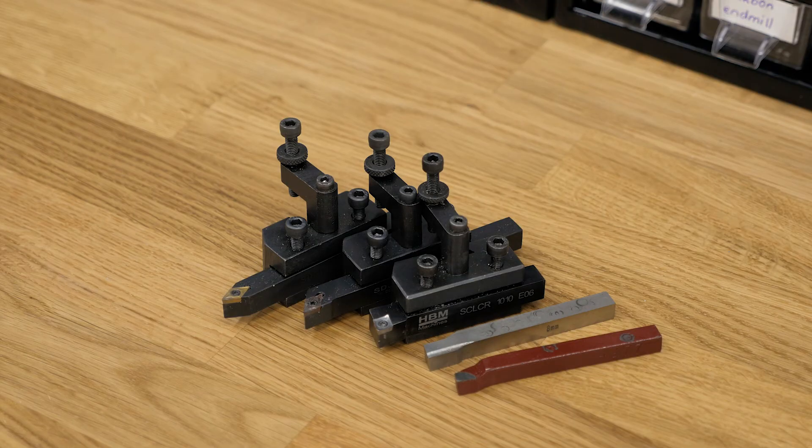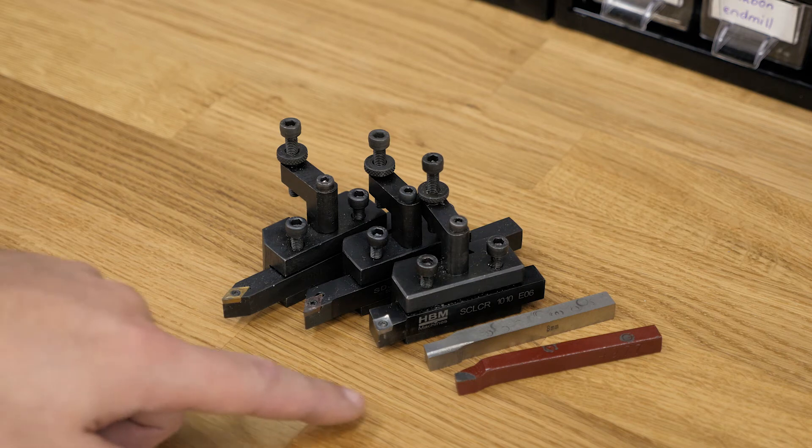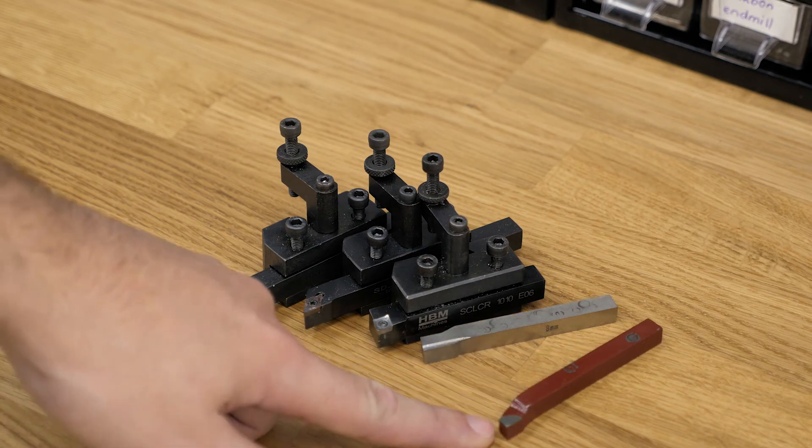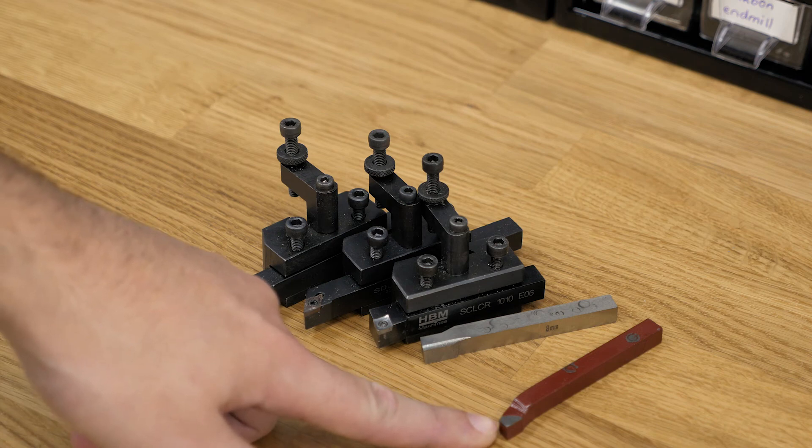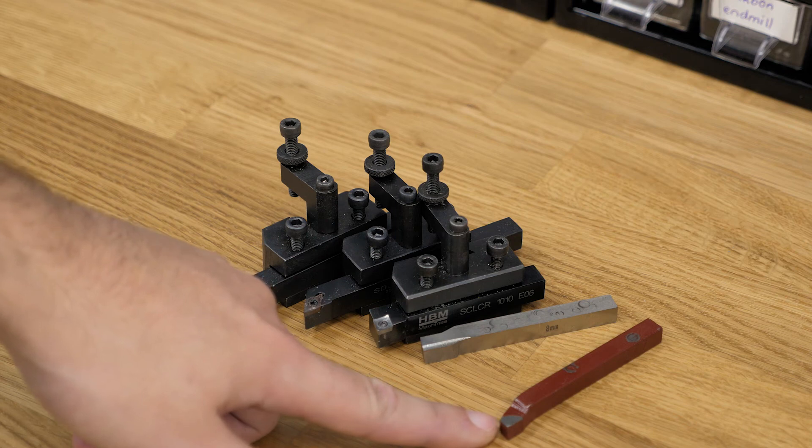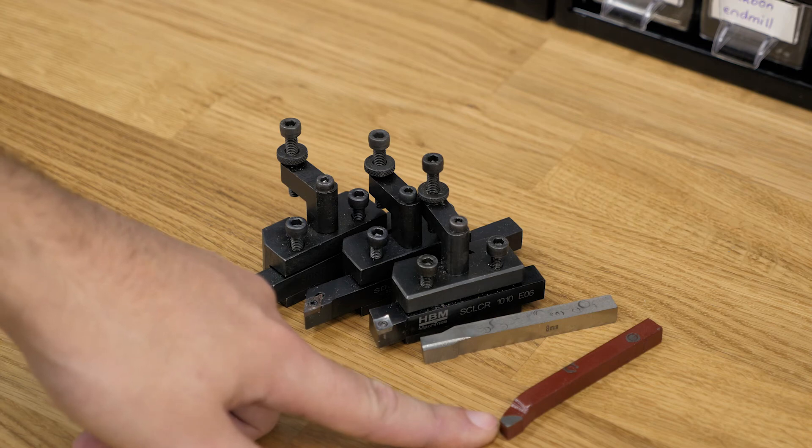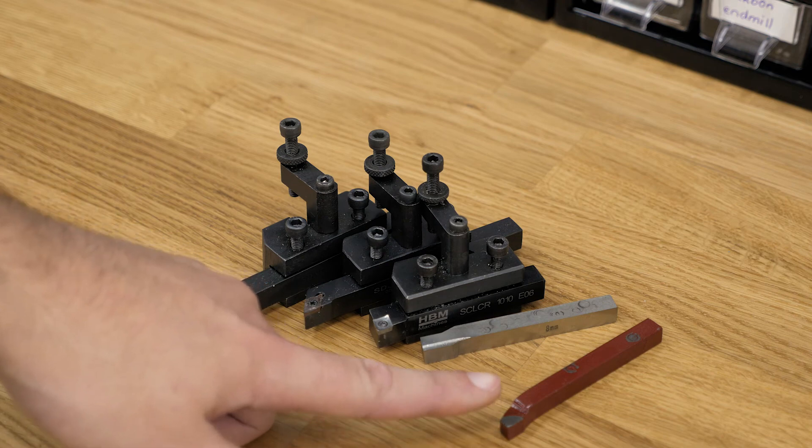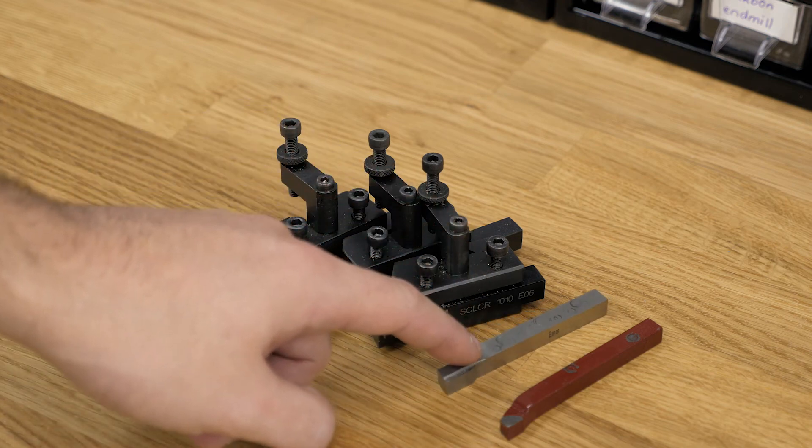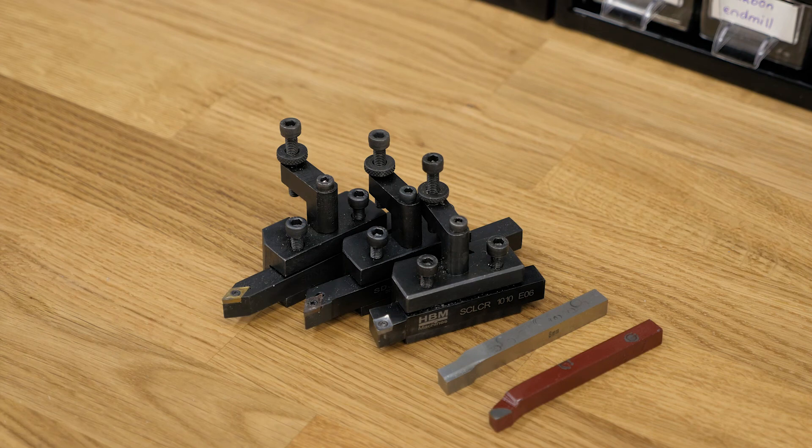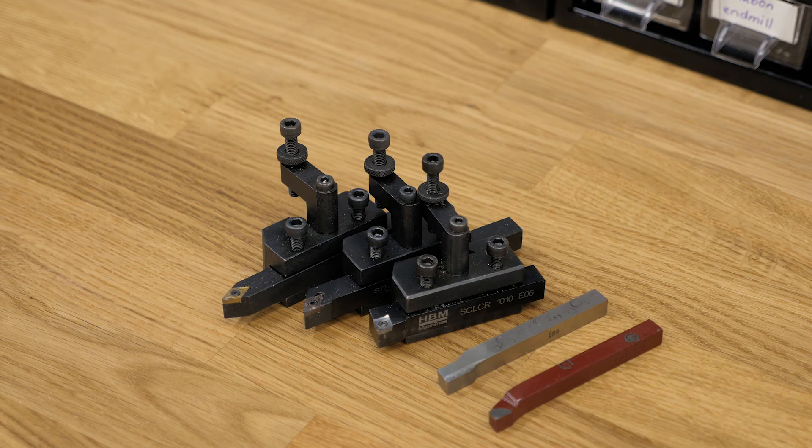So these are some of the tools that I use on my lathe. And from right to left, I bought these tools. These are brazed carbide tools. I bought these with the machine. And it worked all right for a while. But the main problem I have with it is that I do not have the right equipment to sharpen them again. After that I bought these HSS tools. They're really nice. I use them even today quite regularly.